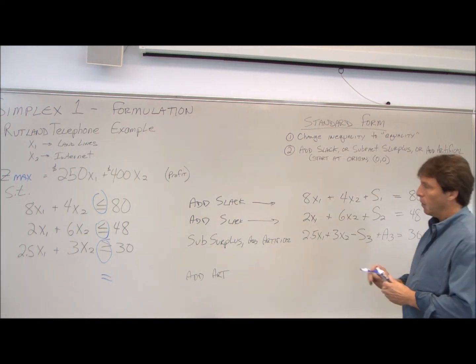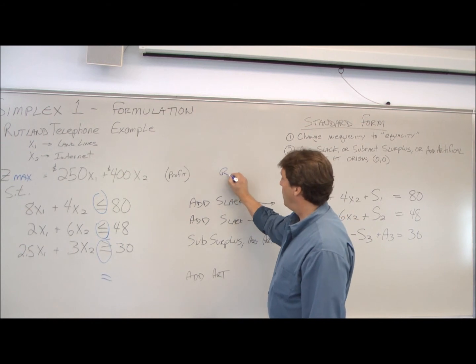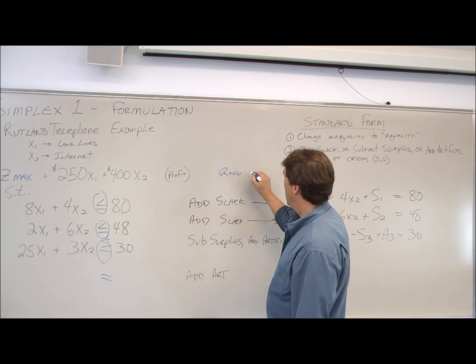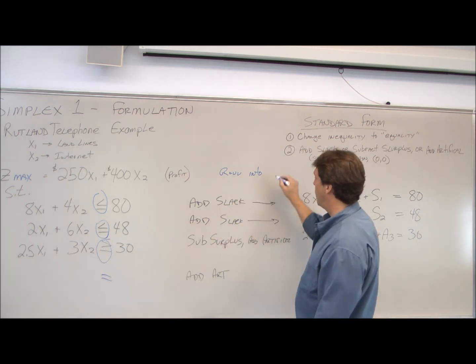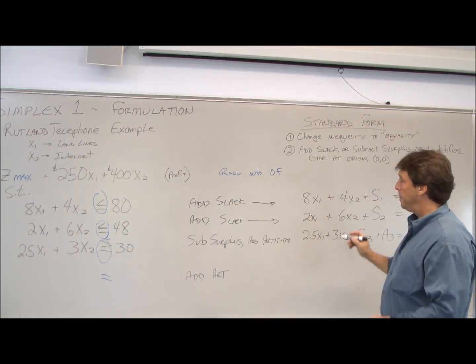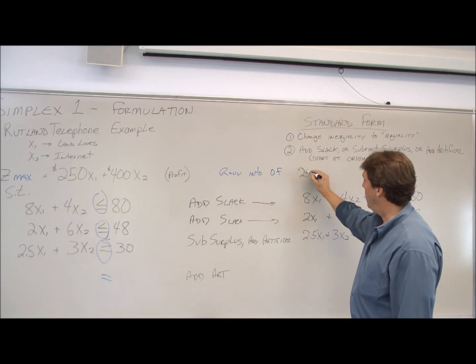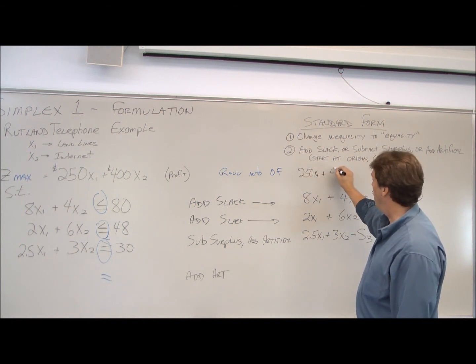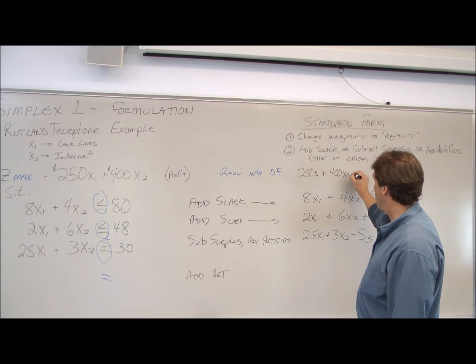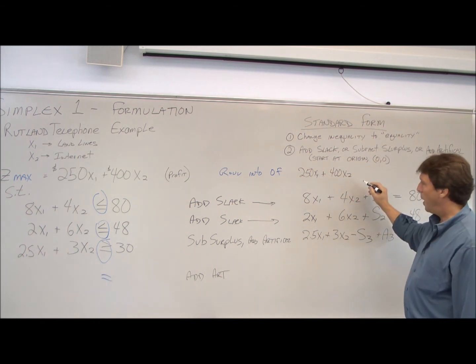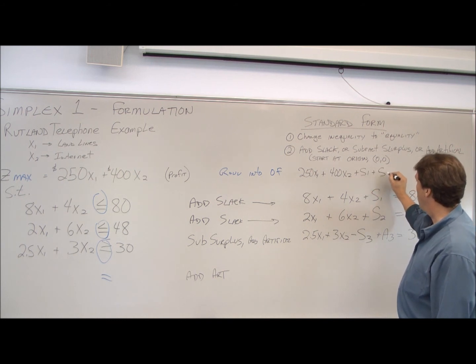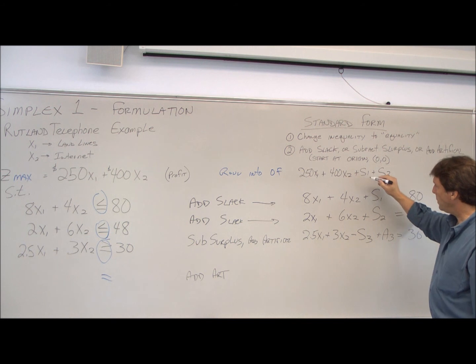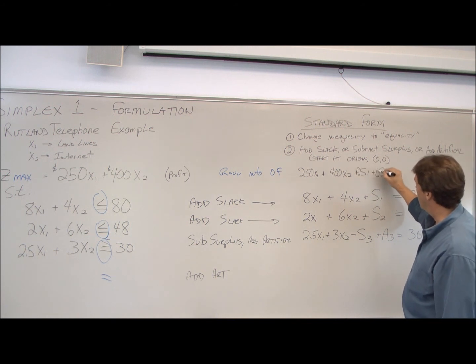The next thing we have to do is roll up into our objective function. So we have 250x1 plus 400x2. We have to add our s1. We have to add our s2. The coefficients for these are zero.